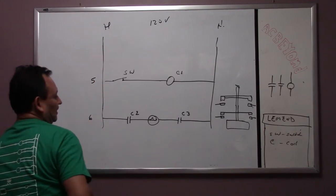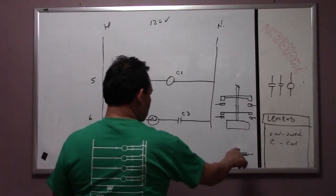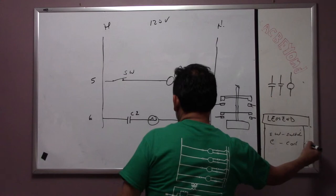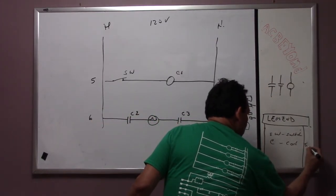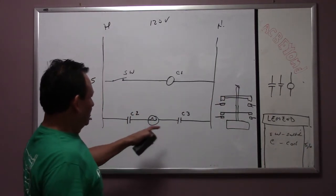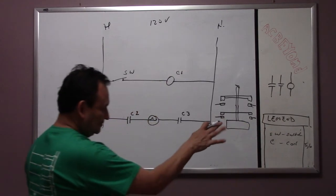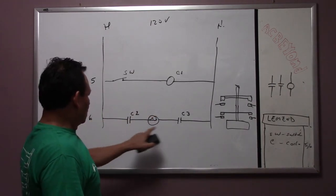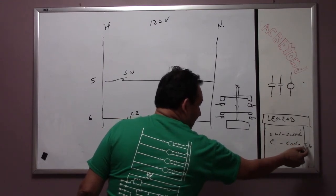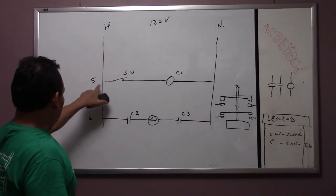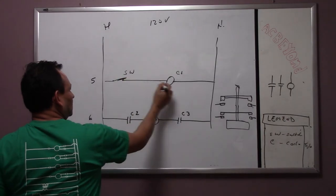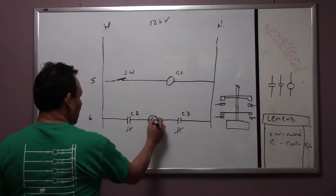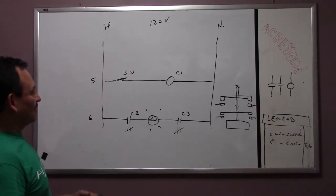Let's say this is line five and this is line six. On the coil, on the side, it's going to say five and six — meaning the coil itself has two contacts, one on line five and one on line six. So when this switch closes, the coil energizes, closes these contacts, and the light bulb is going to light up.